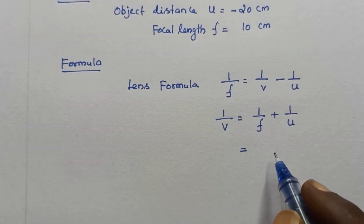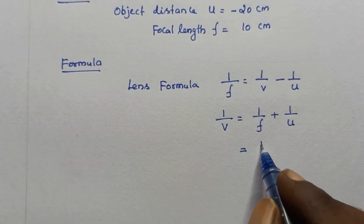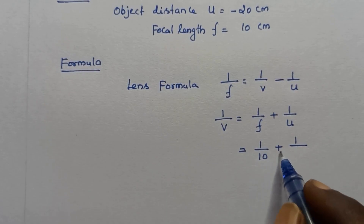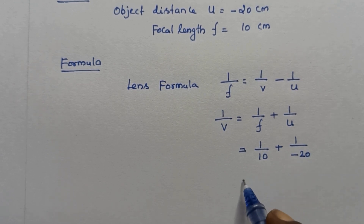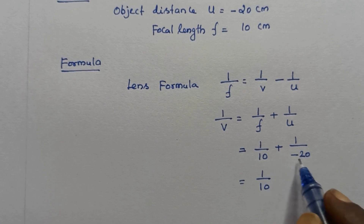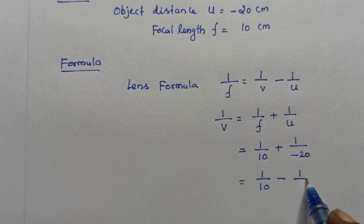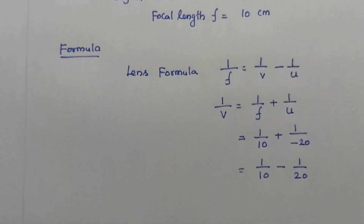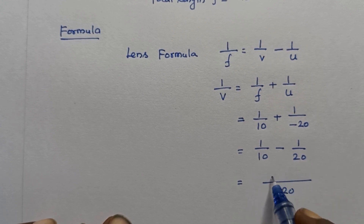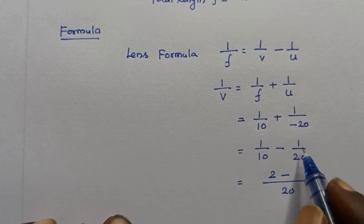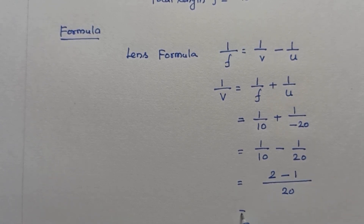Now, substituting the given values, we get: 1 by v equals 1 by 10 plus 1 by minus 20. Taking LCM, which is 20: how many 10s are in 20? Two. How many 20s are in 20? One. So we get 2 minus 1 over 20, which equals 1 by 20.